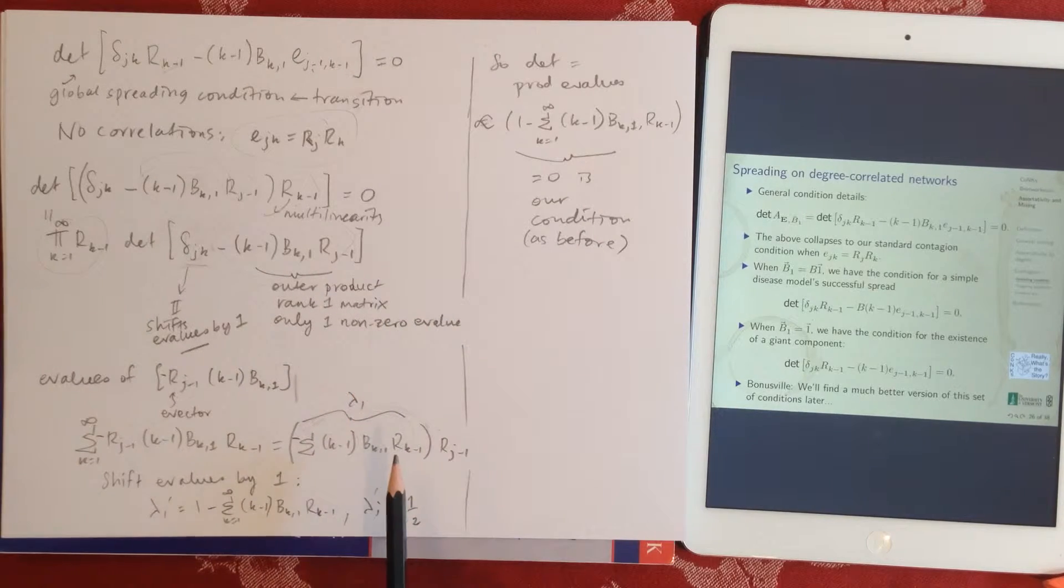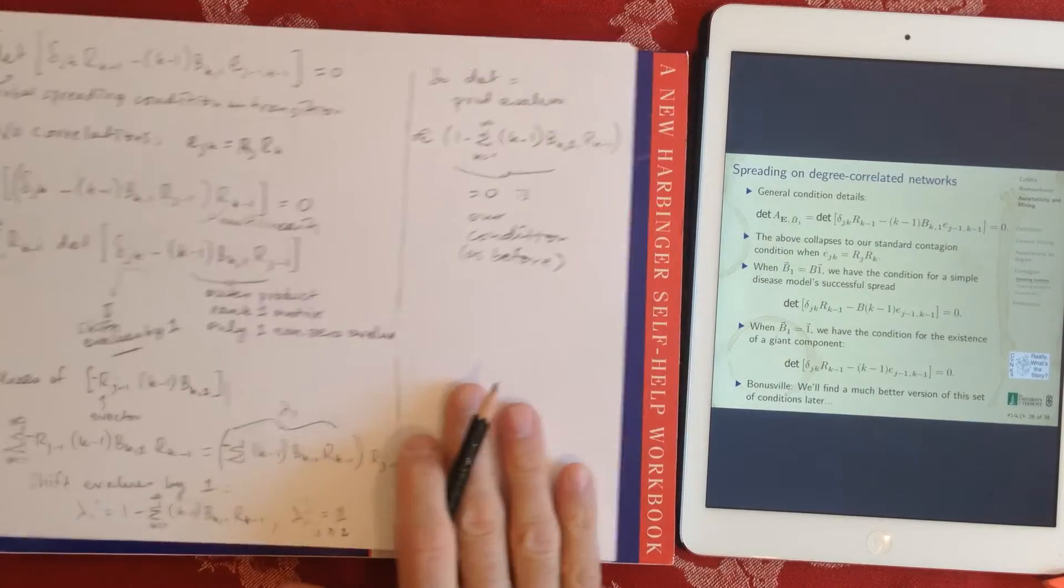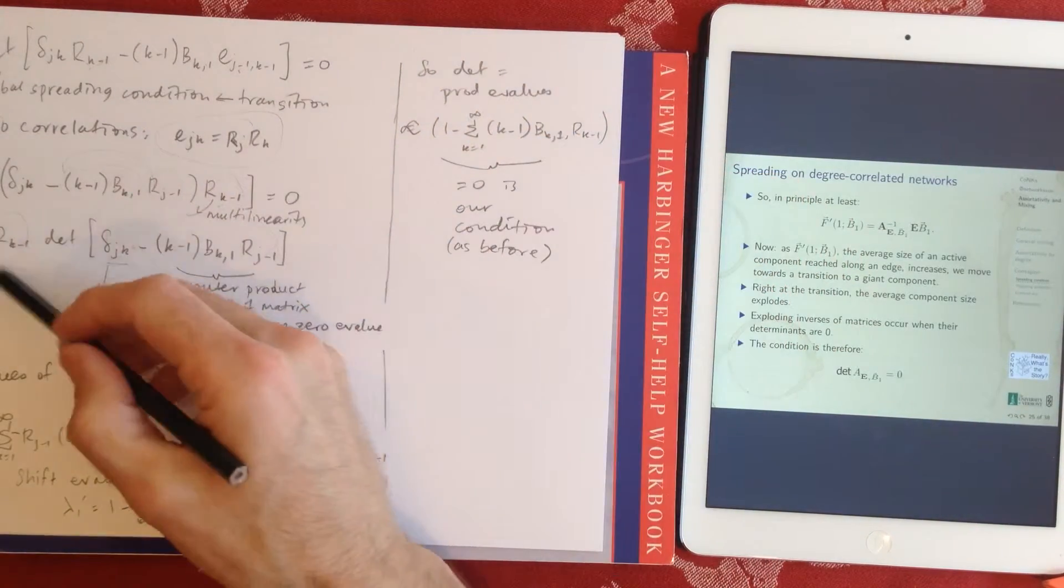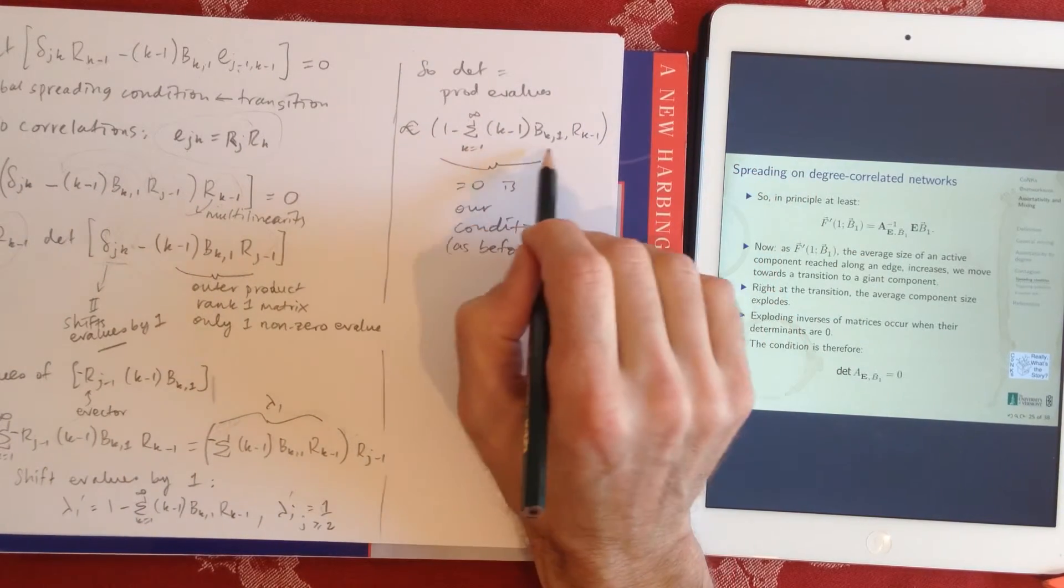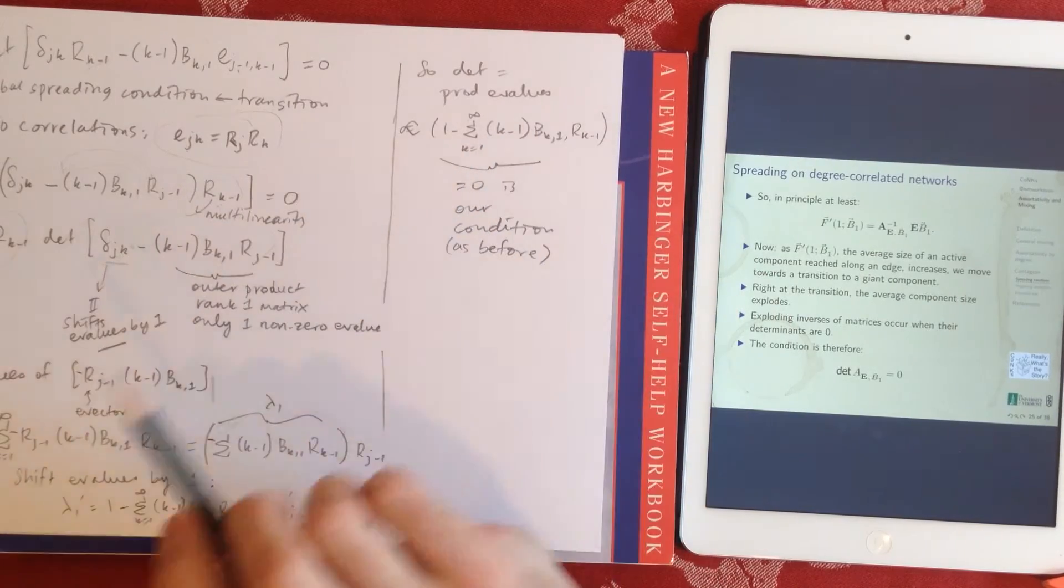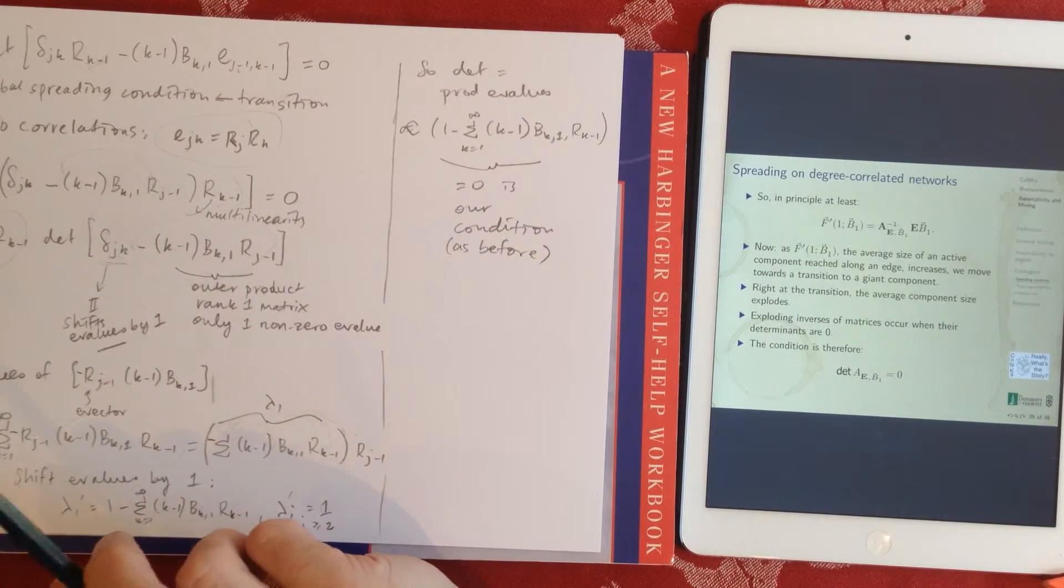All of the other eigenvectors, whatever they are, their eigenvalues are zero because it's a rank one matrix. So we just add one to zero, so we get one for all of those guys. So take the product, everything's one except for the first eigenvalue. So it determines the product of these guys. It's going to be proportional to it. We have the multilinearity piece at the front. It's going to be proportional to this blob. That's the crucial thing. We want that to be zero. And that is our contagion condition before.